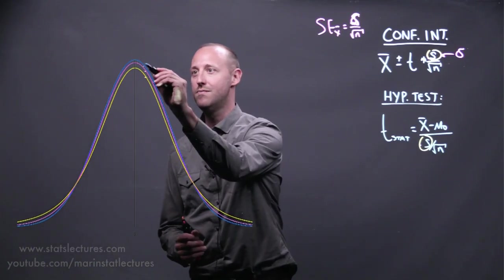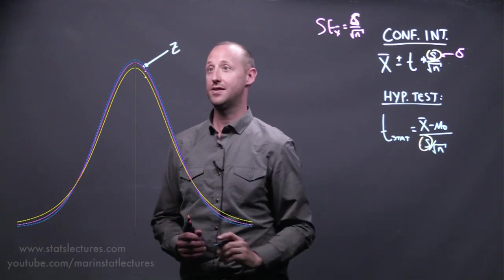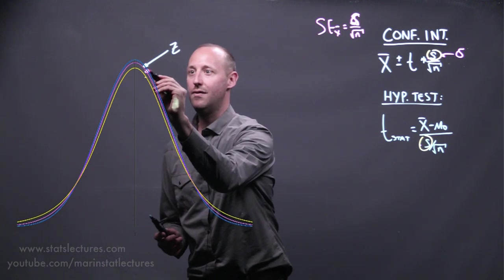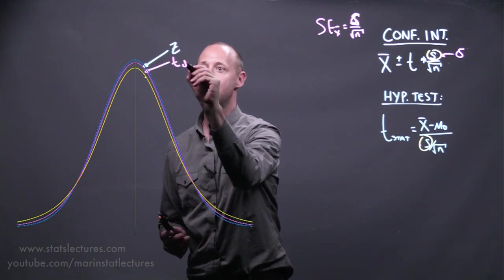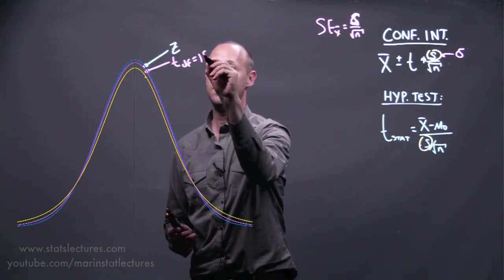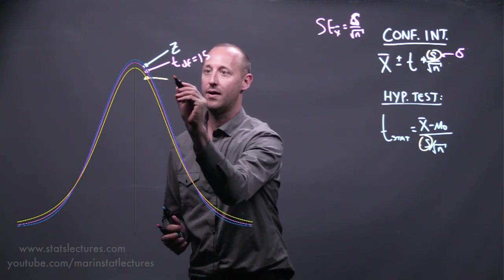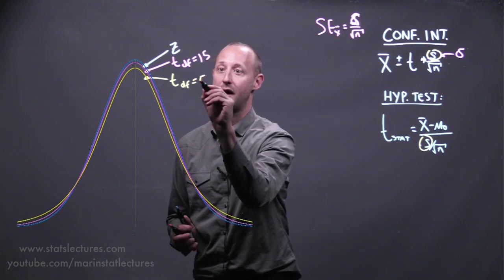Here we can see this is z, the standard normal. Here we've got a t-distribution with degrees of freedom of 15, and here we've got a t-distribution with degrees of freedom of 5.